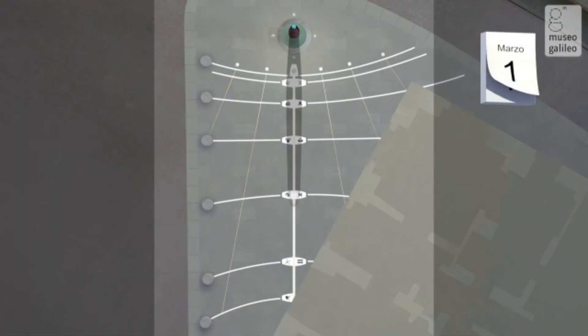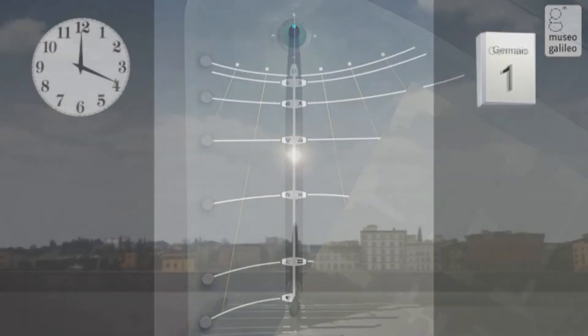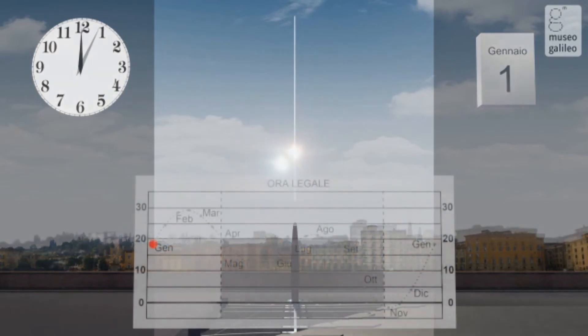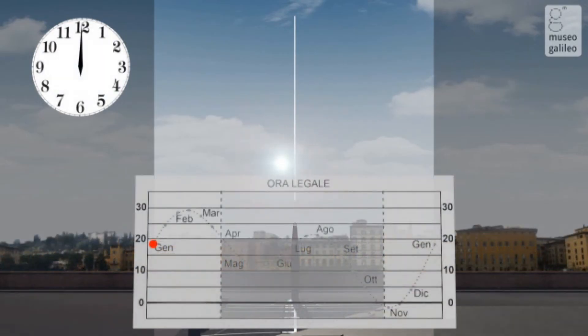The shadow cast by the gnomon changes in length during the course of the days and seasons. It indicates the true solar time of the place, which is different from the time indicated by wristwatches. This last is known as the mean time. In respect to true solar time, mean time has a periodic variation that can exceed a quarter of an hour during the course of the year. The difference between the regular time indicated by wristwatches and the variable time shown by the sundials is known as equation of time.